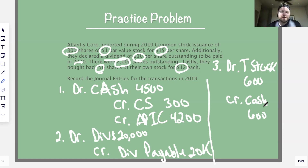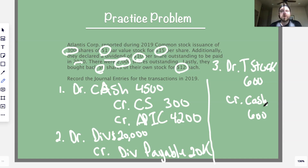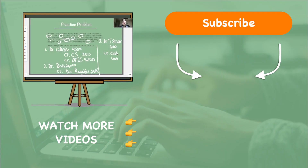That's it — three journal entries for stockholders equity. We went through the different components of equity, examples of journal entries, and a full practice problem. Hopefully that video was helpful. I just released the ultimate depreciation course — doing a 50% off special for a limited time — it covers all the different types of depreciation. Click the link below if you're interested, and thanks for watching!